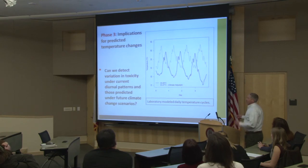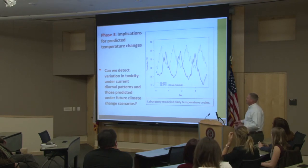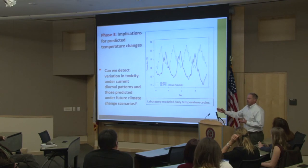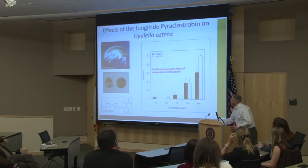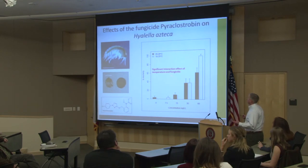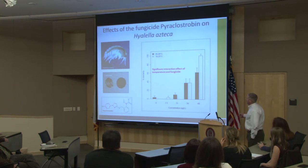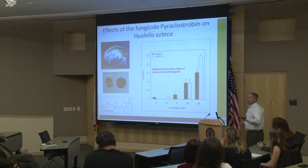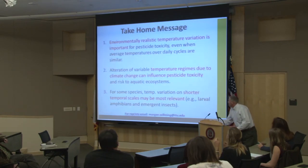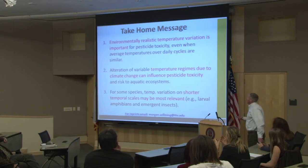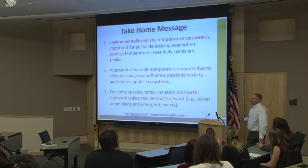Phase three, which Morgan is working on for her dissertation, looks at current variable temperatures versus temperatures forecast under potential climate change. In preliminary work, we found a significant interaction effect of temperature and the fungicide pyraclostrobin — a strobin class fungicide — with temperature and the chemical interacting significantly. We're also working on ecosystem function endpoints, looking at how these organisms shred leaf material as a response variable.